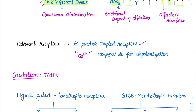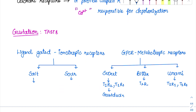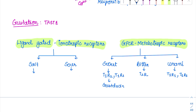Now coming to the second part, that is gustation — it means taste sensation. There are two groups of receptors for the five primary tastes: salt, sour, sweet, bitter, and now umami is also added. Out of these, two are ligand-gated ionotropic receptors — ion channels — whereas three are metabotropic G-protein coupled receptors. We have to remember all the receptors.